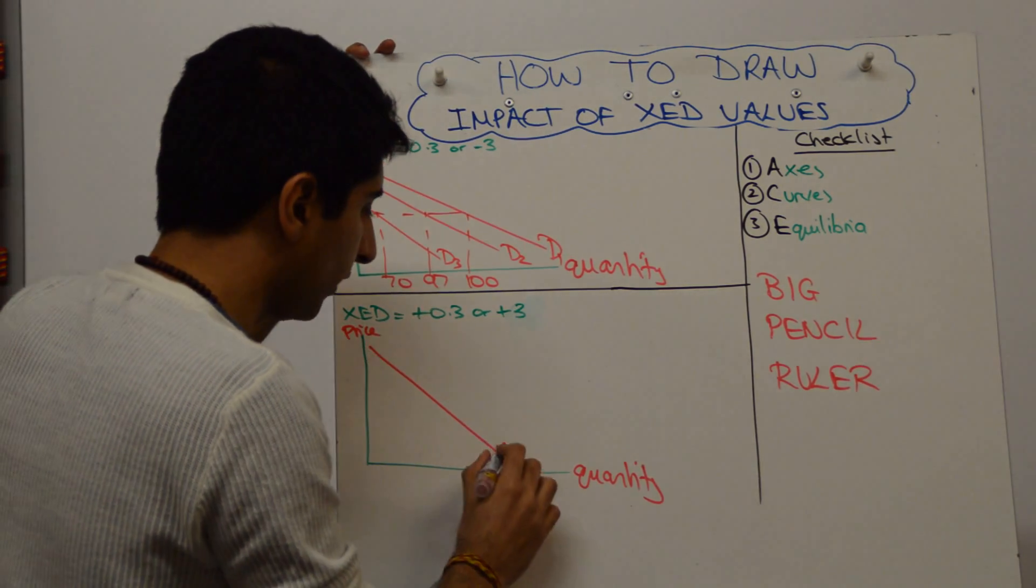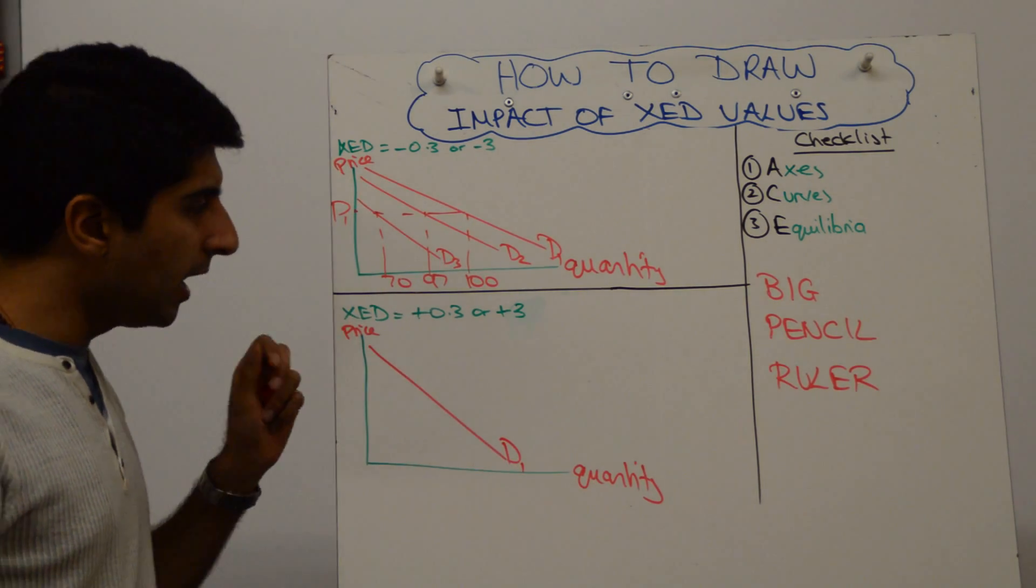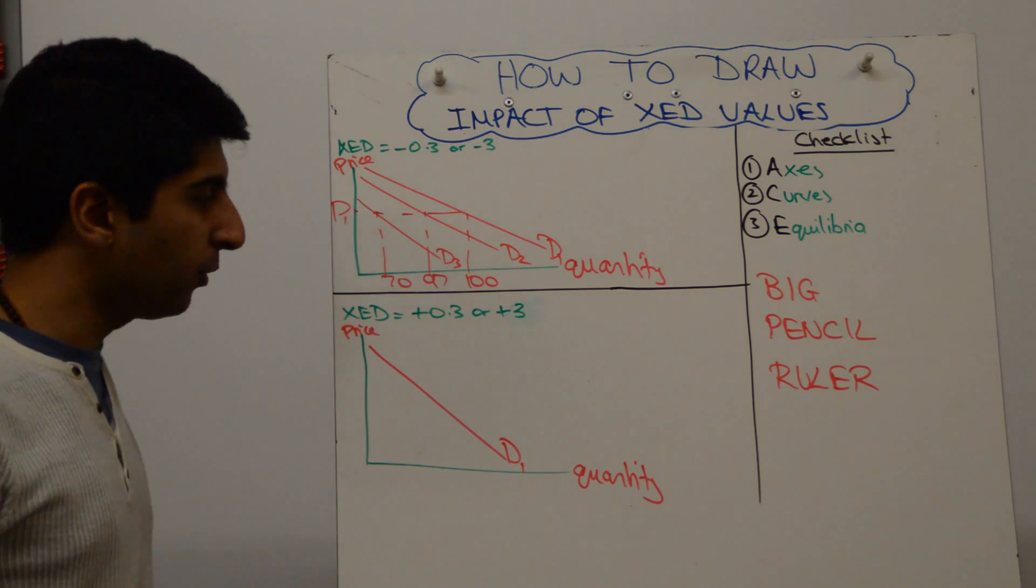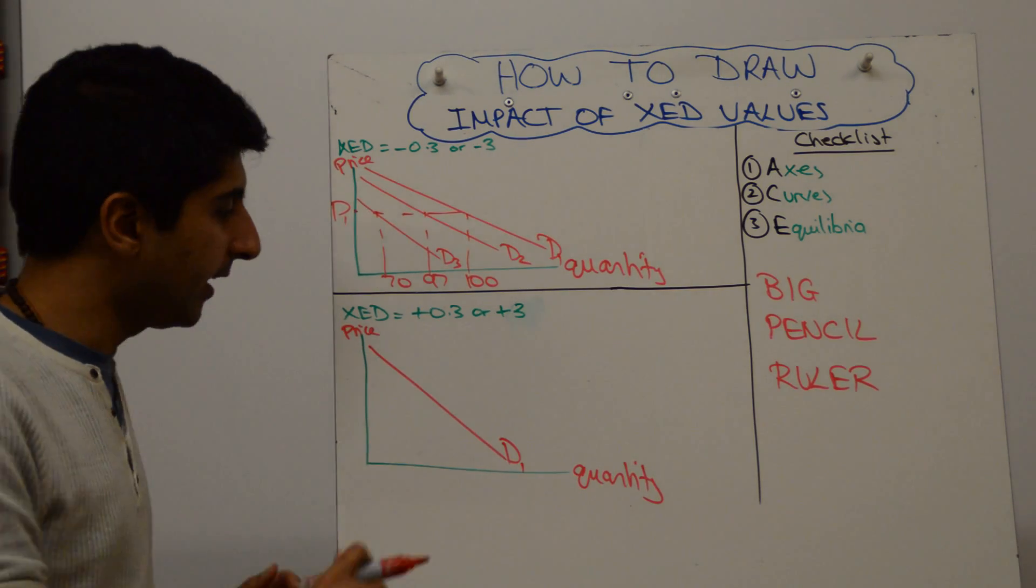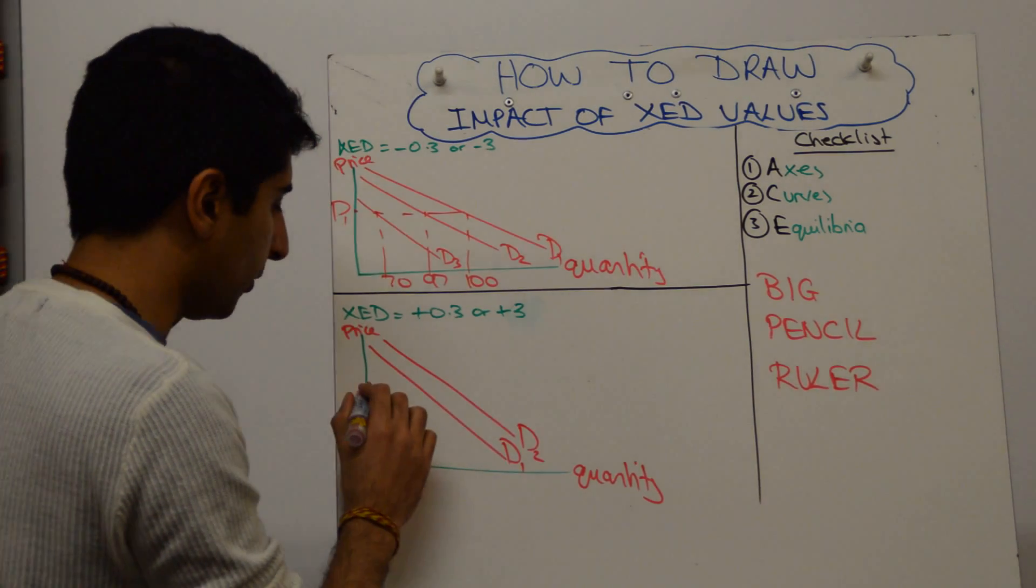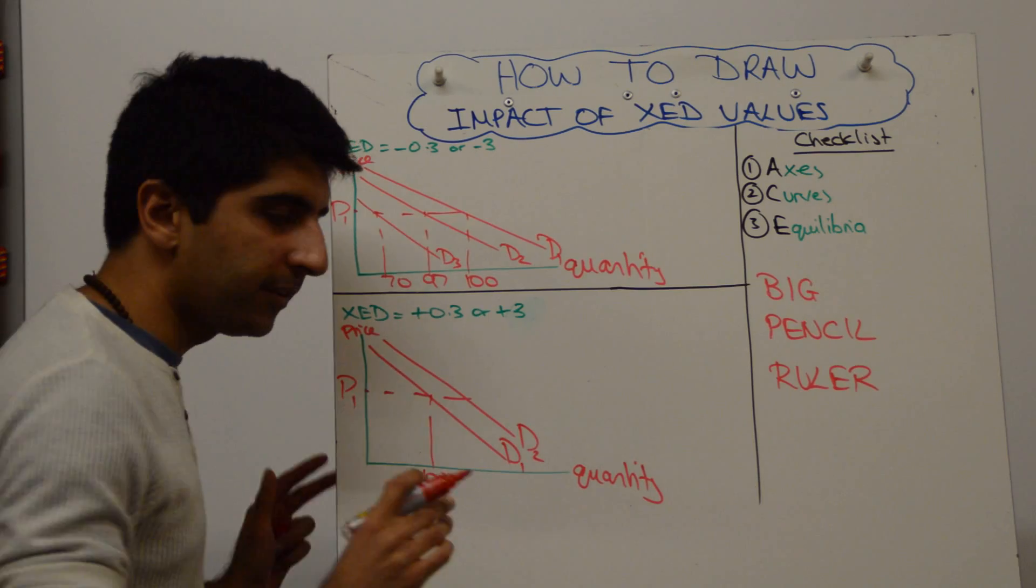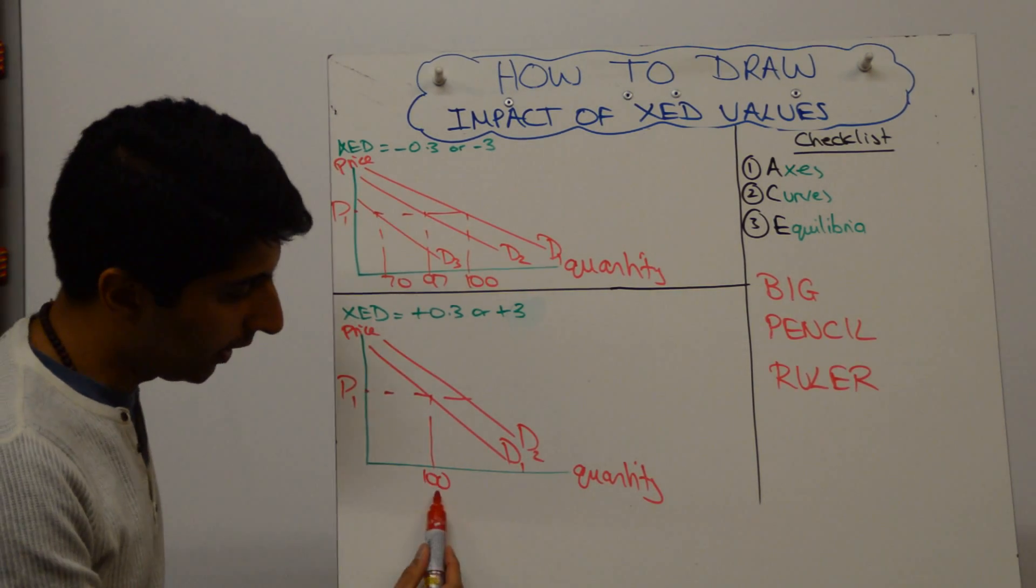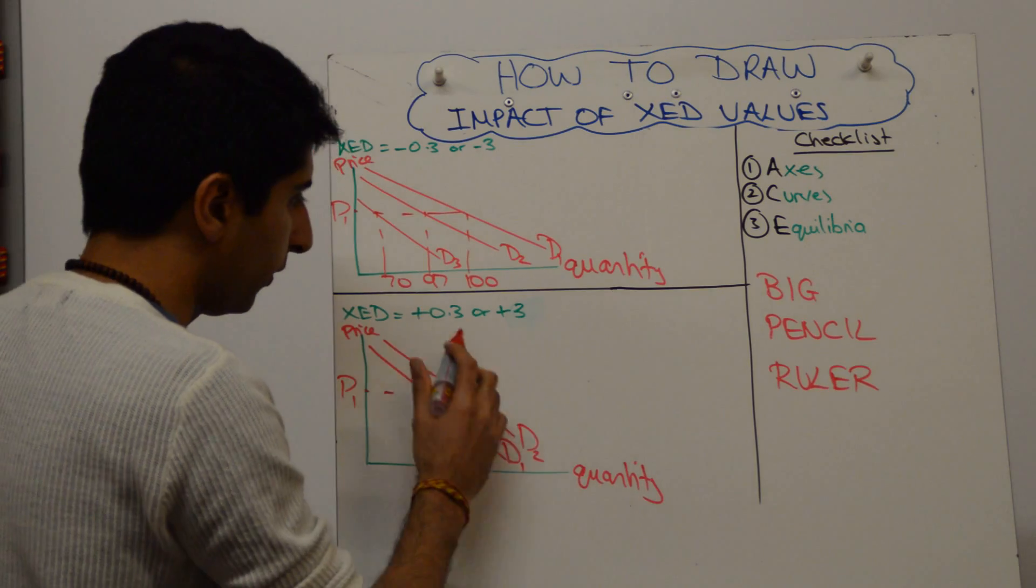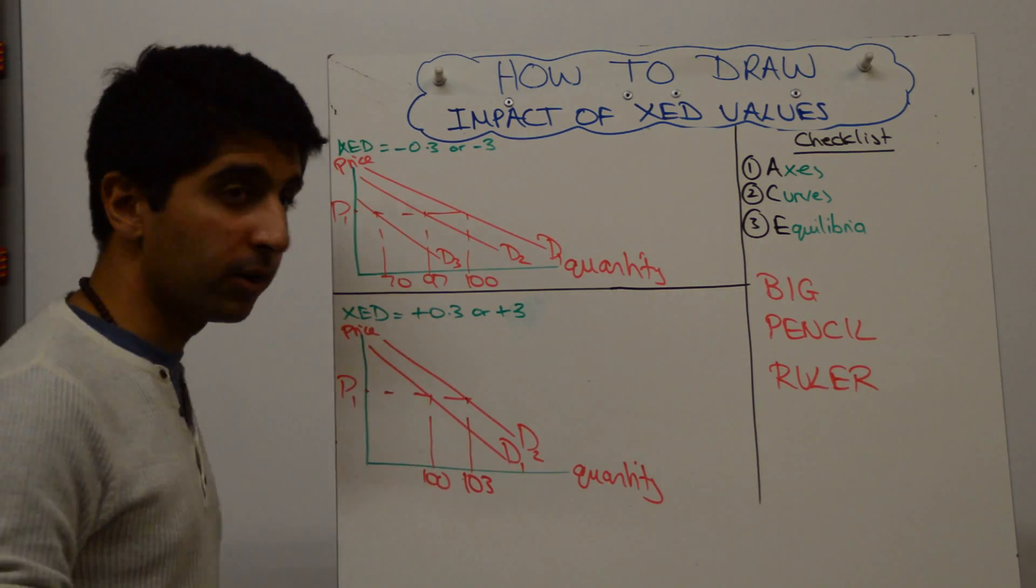So we have initial demand, call it D1, for Adidas trainers. And if the XED relationship is plus 0.3, and Nike's went up by 10%, there would only be a small increase in demand. So demand was shift to the right, but only a little bit. So the price of Adidas trainers does not change. So let's say, again, keep the numbers simple, that's what I'm trying to tell you, at 100 here. Then the increase with a 0.3 relationship would only be to 103, that's a 3% increase.